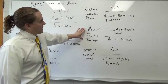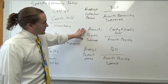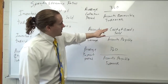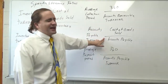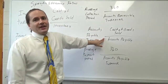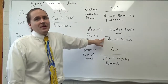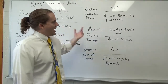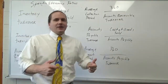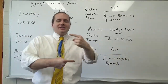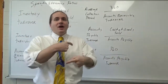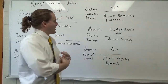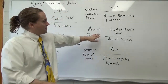You've also got your accounts payable turnover. That's the cost of goods sold divided by the amount of accounts payable. Let's say I have the number 9 — that tells me about 9 times per year I turn over my total accounts payable.